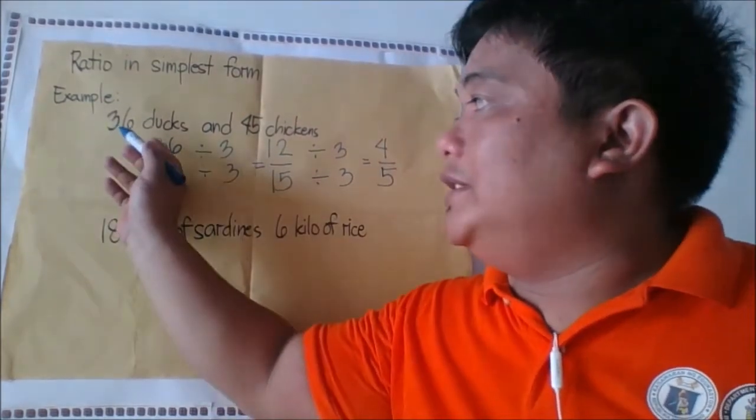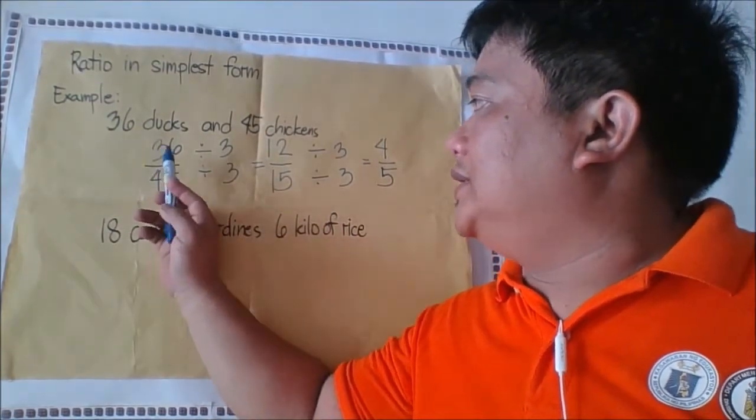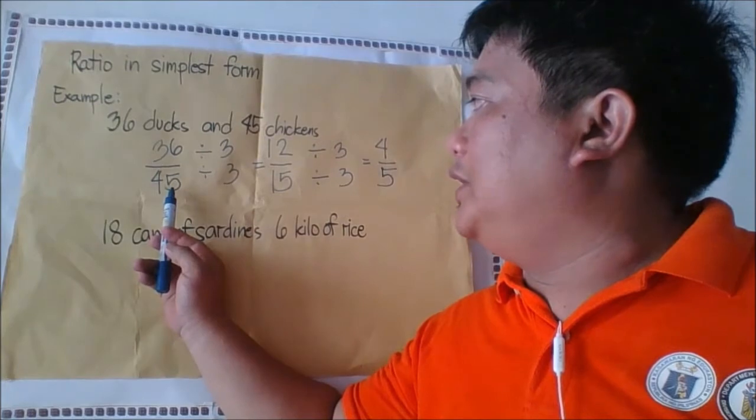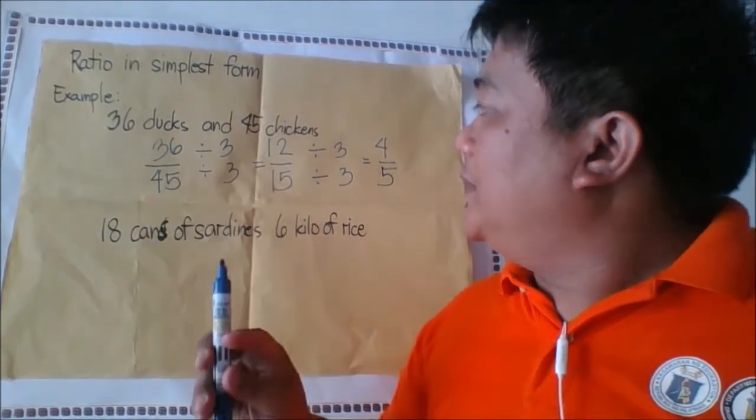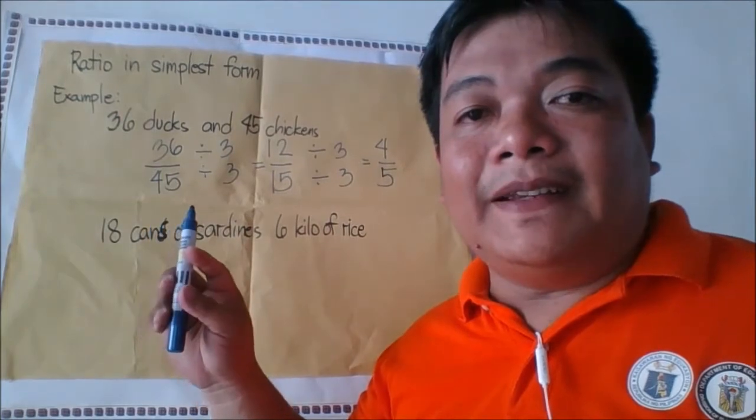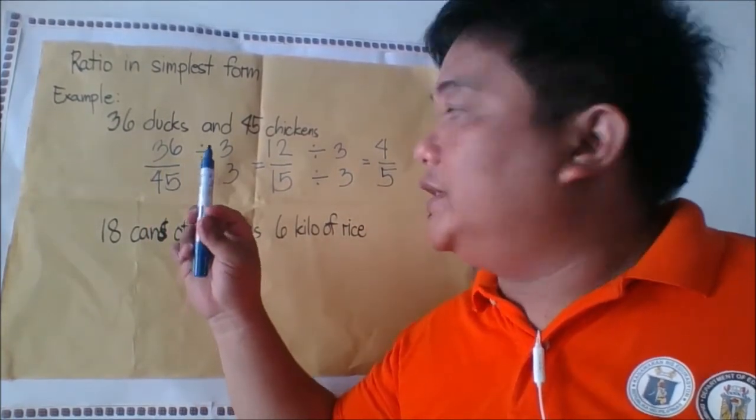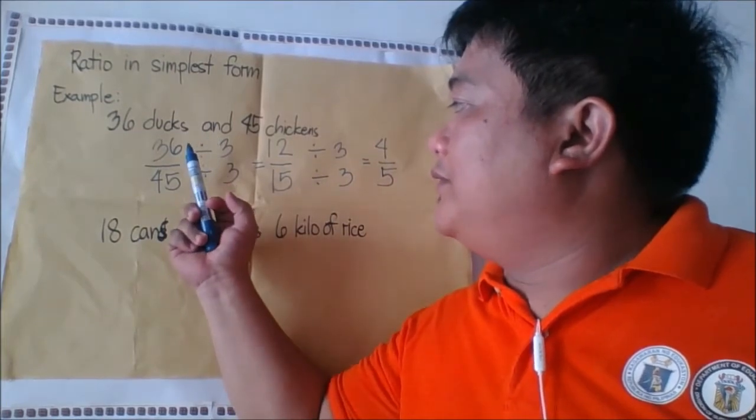We have here 36 ducks and 45 chickens, so the ratio is 36 to 45. We're going to find the simplest form by dividing by the common factor of the two terms. The common factor of the two terms is 3.